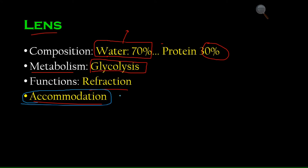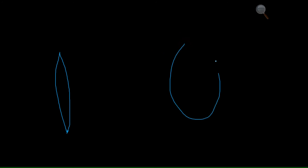The other function is accommodation. Accommodation is the property of the lens by which it helps us visualize things that are near. The lens can be in one of two configurations: very flat or very round, and this shape is controlled by the ciliary body through its suspensory ligaments.